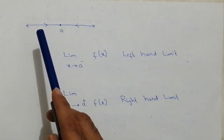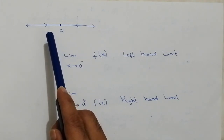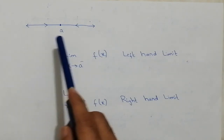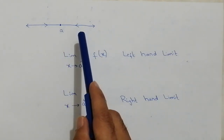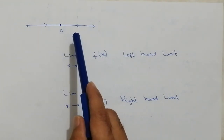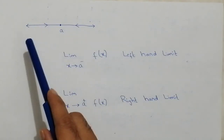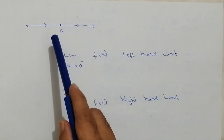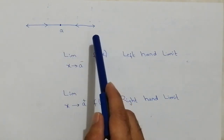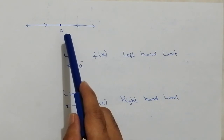When x is approaching from the left-hand side, it means the value of x will be a little bit less than A. And when x is approaching from the right-hand side, it means the value of x will be a little bit more than A. When the value approaches from the left-hand side, it is called the left-hand limit. And when the value is approaching from the right-hand side, then it is called the right-hand limit.